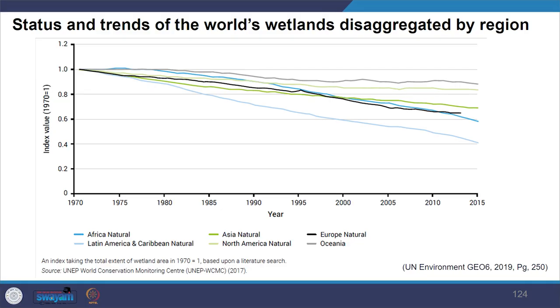In the image you can see the status and trends of the world's wetlands disaggregated by region. The dark green line indicates the trend in Asia — you can see how wetlands are reducing. Ecosystem services for all wetland types have been financially valued, ranging from US $300 to nearly US $9 million per hectare per year. Peatlands are very important as they have high carbon sequestration value, containing more carbon than all global forest biomass combined.